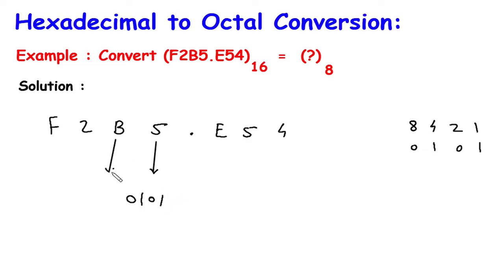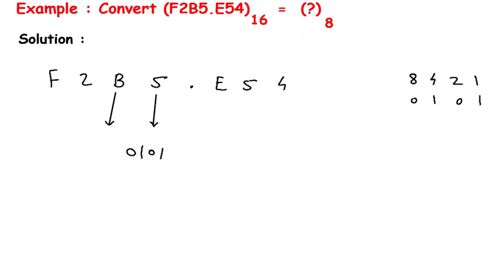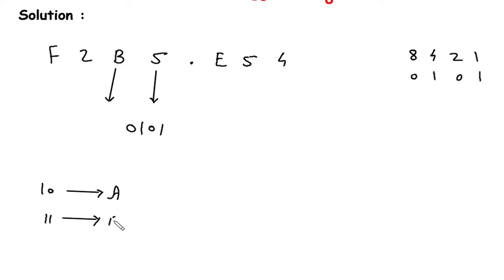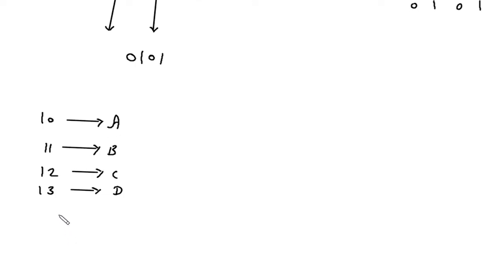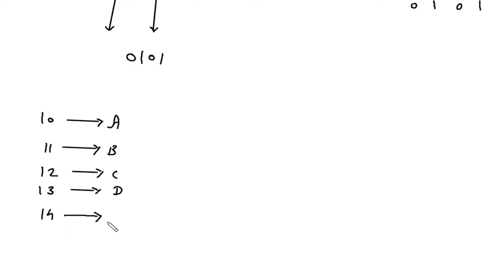Then this B. In hexadecimal, the letters represent: A is 10, B is 11, C is 12, D is 13, E is 14, F is 15.